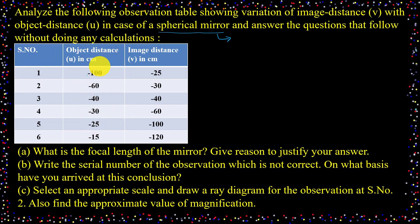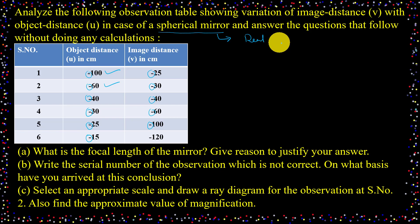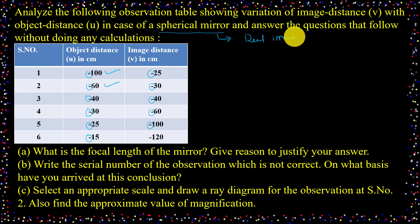If I observe the object distance, we know that object distance is always negative because the object is placed on the left side of the pole. Now, looking at the image distance — image distance is also negative in all five cases. Image distance being negative means the image is on the left side. If the image is on the left side in a mirror, it is a real image. That means this is a concave mirror, because a concave mirror produces real images. With the negative sign of the image distance, I identified it as a real image, and I confirm the mirror is a concave mirror.